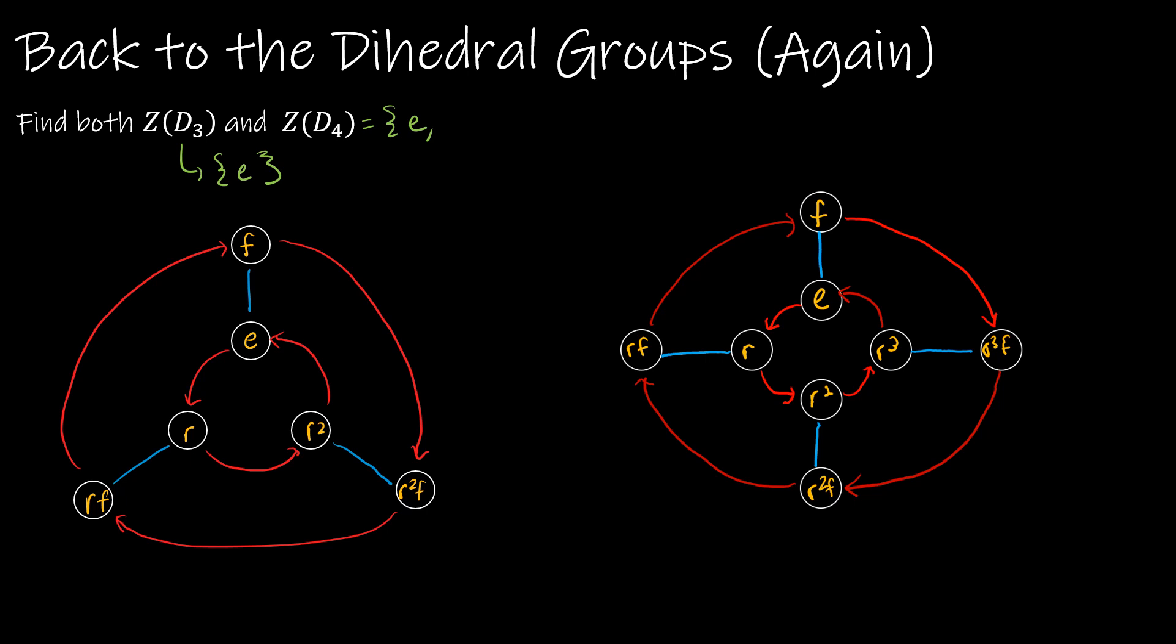Now, I can go through and do that as well for D4, but let's take a look at what we know about, say, RF. Essentially, what I know is that RF has to equal (RF)^{-1} in order for the element to commute. So for R and F to equal (RF)^{-1}, I need RF to equal, this is Socks-Shoes property, F^{-1}R^{-1}. Well, what's the inverse of F? How do I undo F? I just do F again. So really, I'm looking at when does R equal R^{-1}? Well, obviously, the identity, which we've already put in the center.